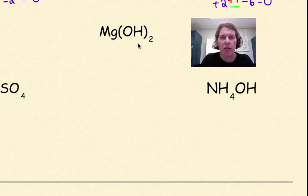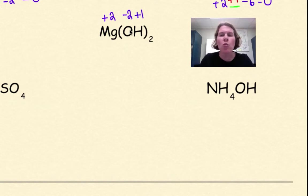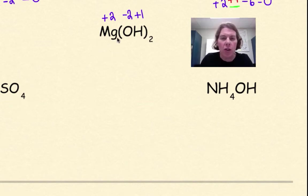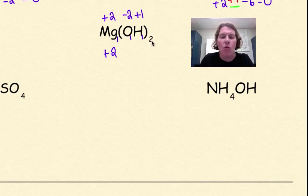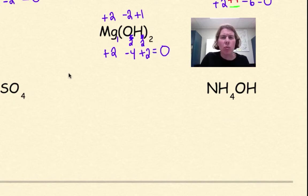Now let's look at magnesium hydroxide, Mg(OH)2, which has a bracket — think of the distributive property, so pay close attention. Magnesium has an overall charge of plus two. Oxygen is minus two, and hydrogen is plus one. Double-checking the algebraic sum: there's an assumed one inside the parentheses for each atom. Two times one gives plus two for magnesium. The two outside distributes across, making oxygen two atoms and hydrogen two atoms. Negative two times two gives negative four, and one times two gives plus two. The whole thing is electrically neutral.